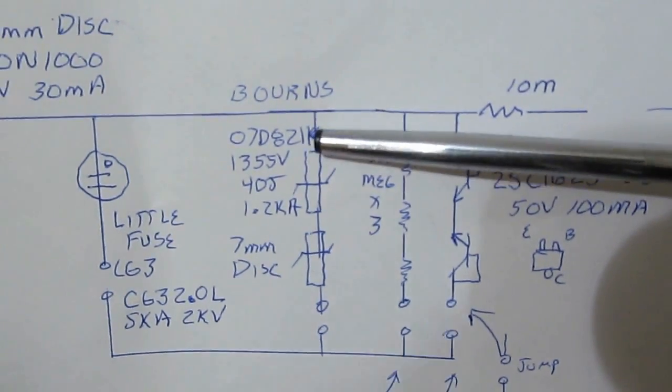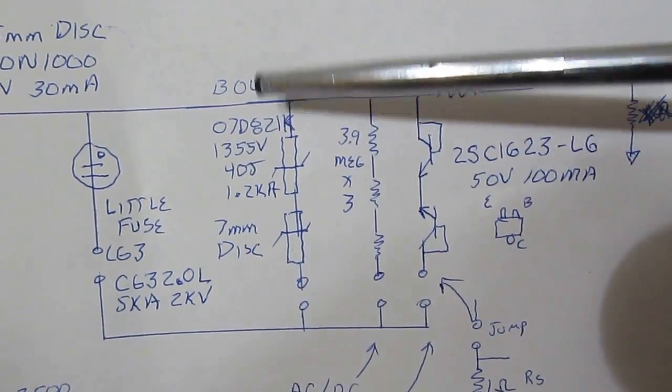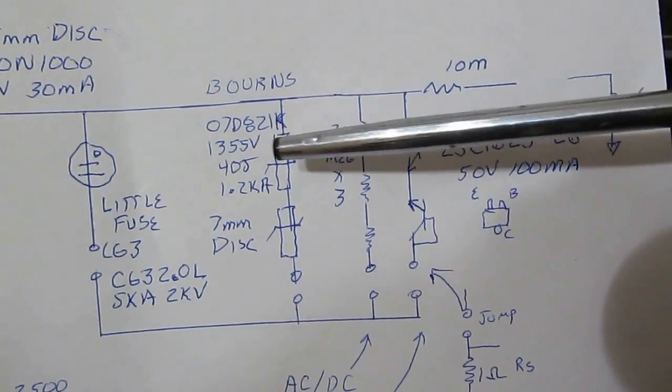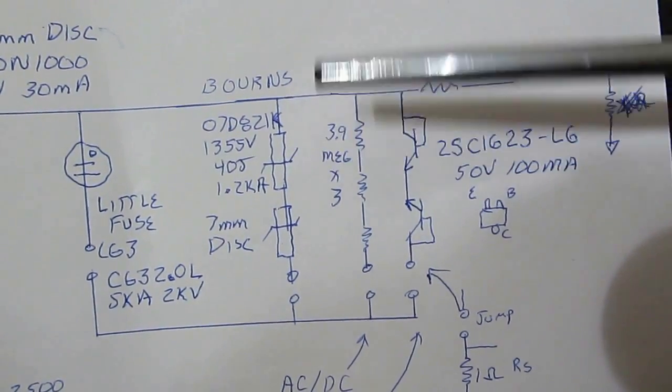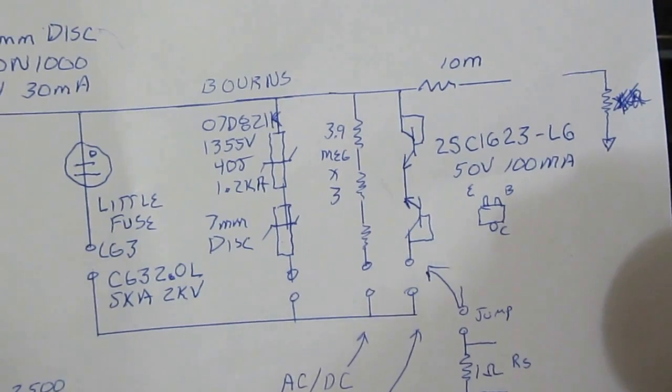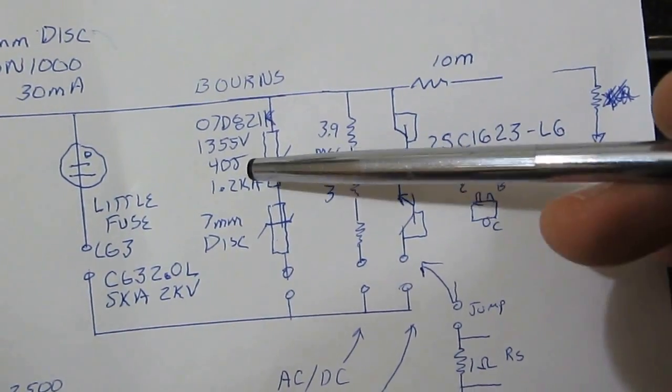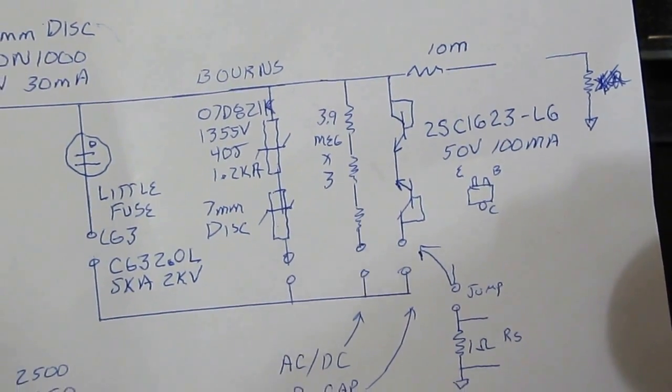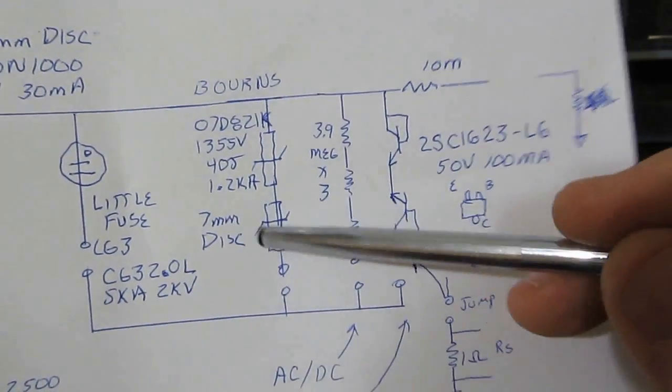Next, I have two MOVs in series. These are a part number 07D-821K. There's two of these in series. They're rated for 1355 volts each. That's their clamping voltage. They're rated for 40 joules and 1.2 kiloamps. These are both 7 millimeter discs.